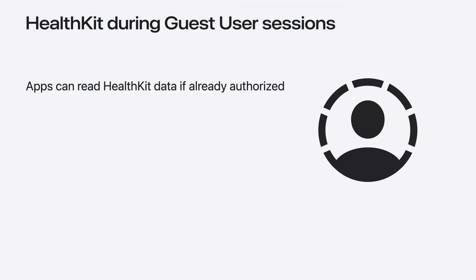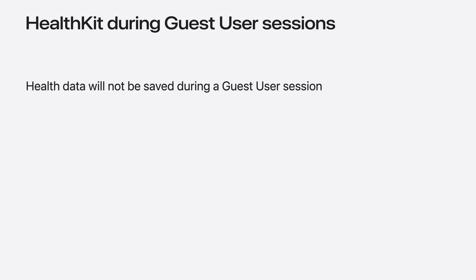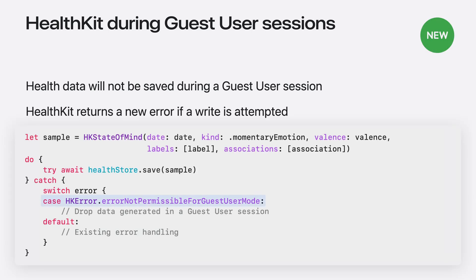Apps running for the guest can still access HealthKit data if they are already authorized. However, apps cannot request additional HealthKit authorizations from the guest, and the system will not present the authorization flow if requested, returning an error instead. The guest is also not able to edit authorization, privacy, or security options in Vision OS settings. There's one more restriction: HealthData cannot be written to HealthKit during a Guest User session. This is to prevent data generated by the guest from mixing with the owner's health data. HealthKit will return a new error if an app attempts to write data during the session. Handling this error gives you the opportunity to safely discard data generated by the guest, which ensures that it isn't saved to the owner's health store at a later time. This is also a good place to trigger an alert to indicate to guests that the data has not been saved.